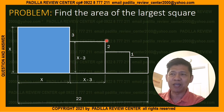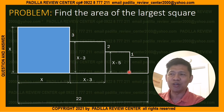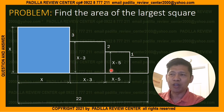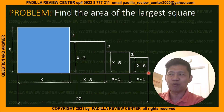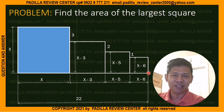If this segment is x minus 3 and this is 2, then the next segment is x minus 3 minus 2, which is x minus 5. Since it's a square, the opposite side must also be x minus 5. And if this is x minus 5 and this is 1, then this segment is x minus 5 minus 1, which is x minus 6. So this one must also be x minus 6.